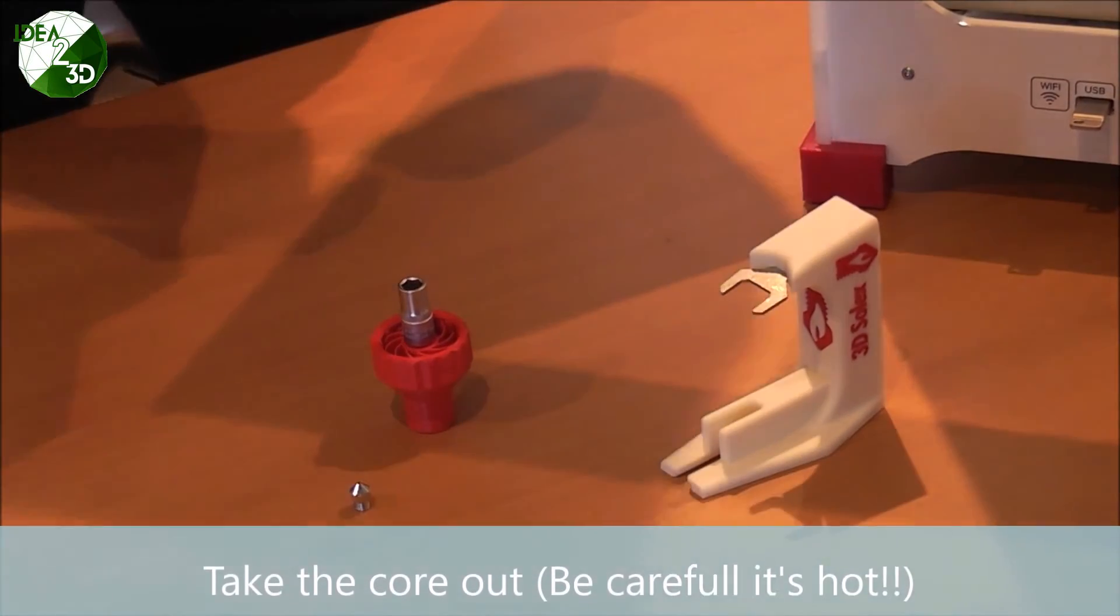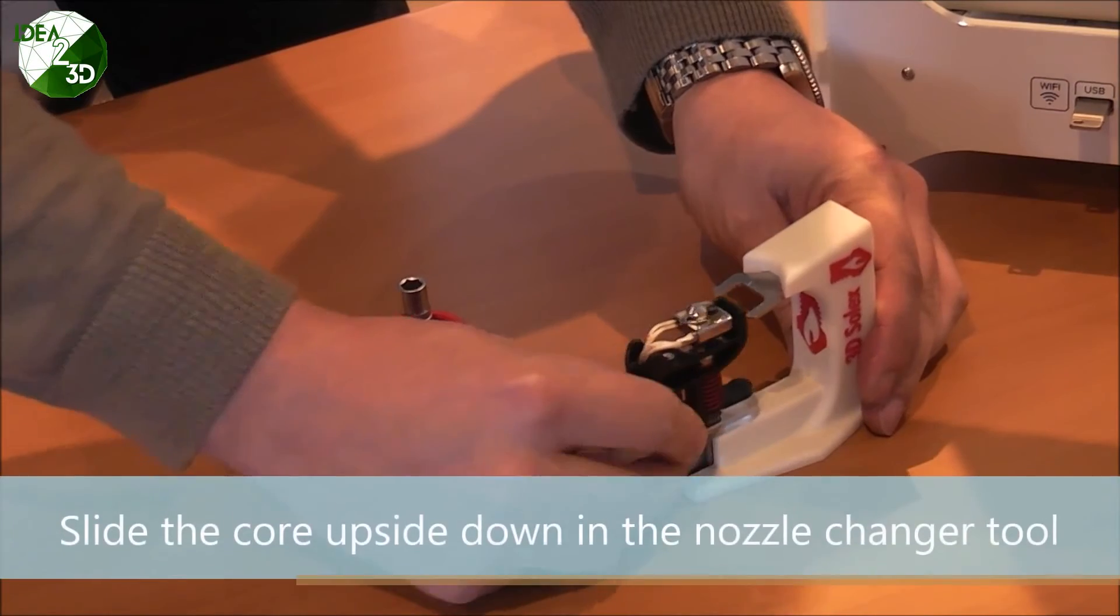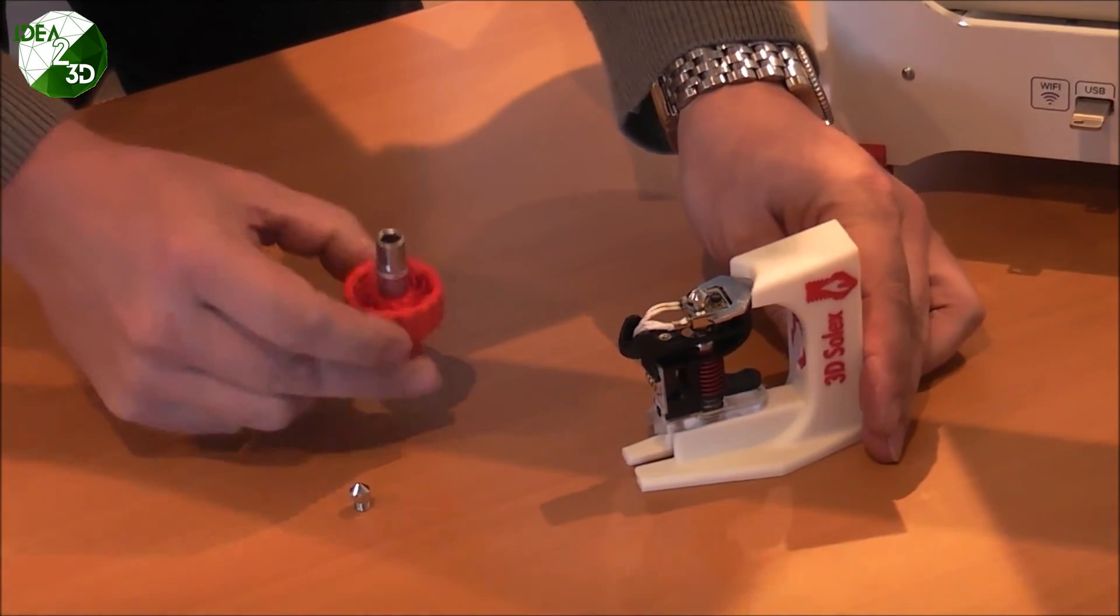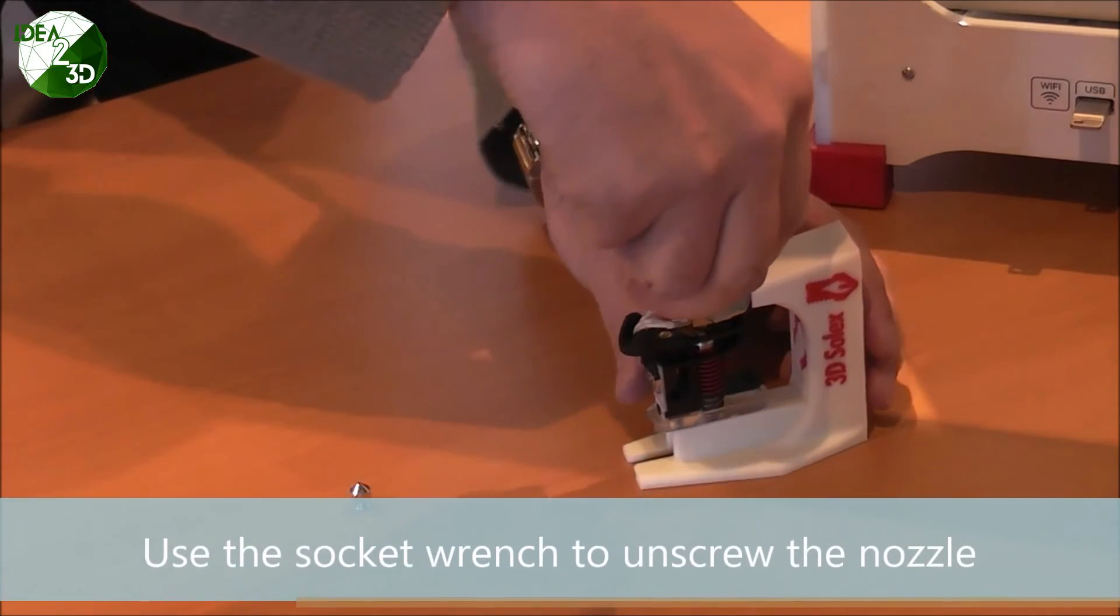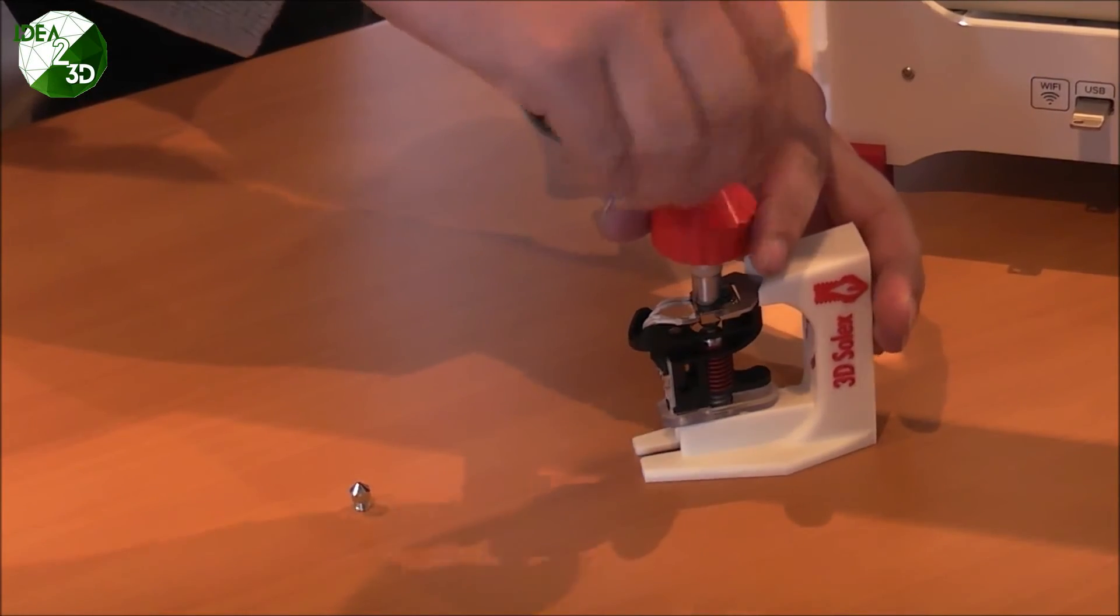Then take the core out. Be careful, it's hot. Slide the core in the nozzle changer tool like this. Then use the socket wrench to unscrew the nozzle.